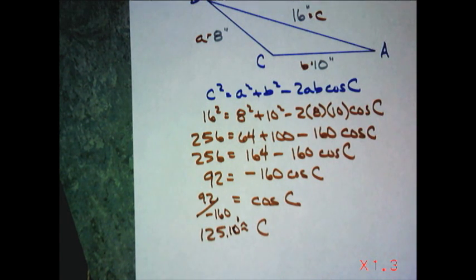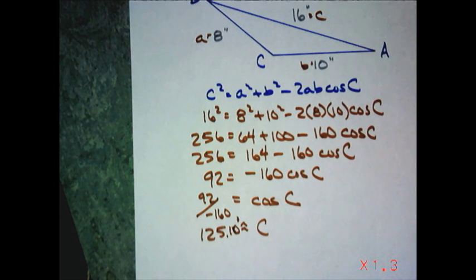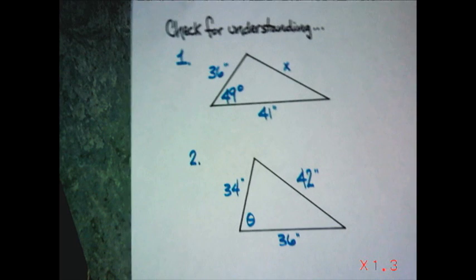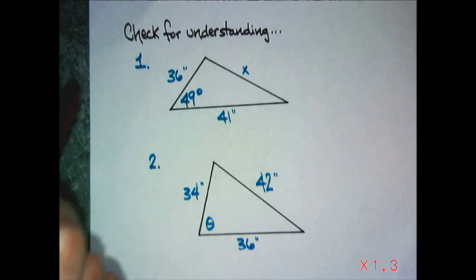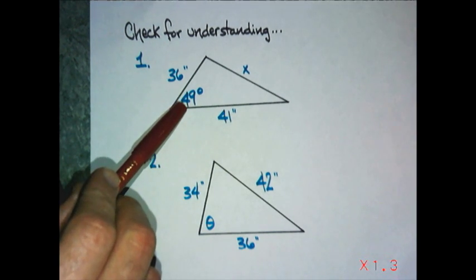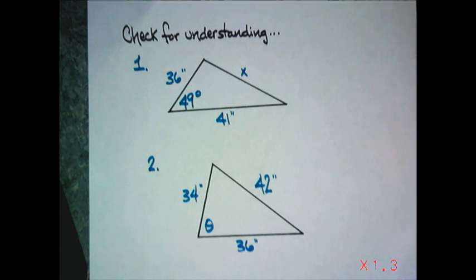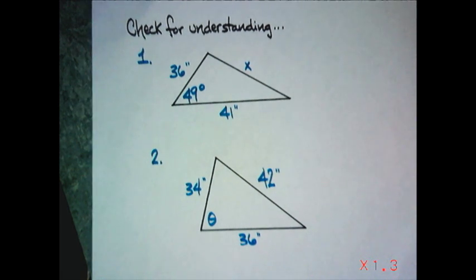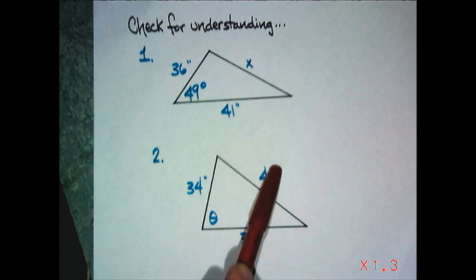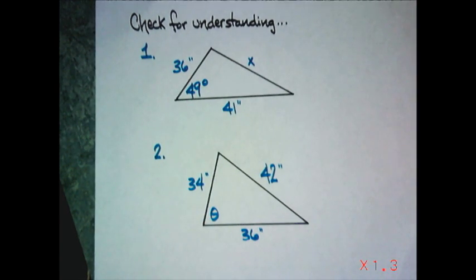Tomorrow we'll do many more applications of the Law of Cosines, but that should be enough to get you going tonight. I explained how I derived it — you can go back and review the algebra — and then you just apply the formula. Here are tonight's problems: number one, a triangle with sides 36 inches and 41 inches with a 49-degree included angle — find the opposite side length. Number two, sides 34, 36, and 42 — find the largest angle. Straightforward Law of Cosines. Good luck.